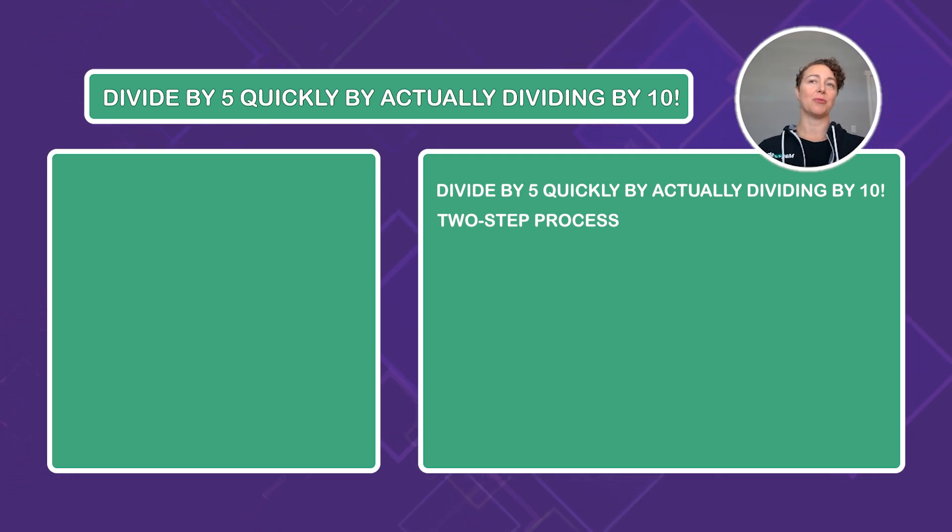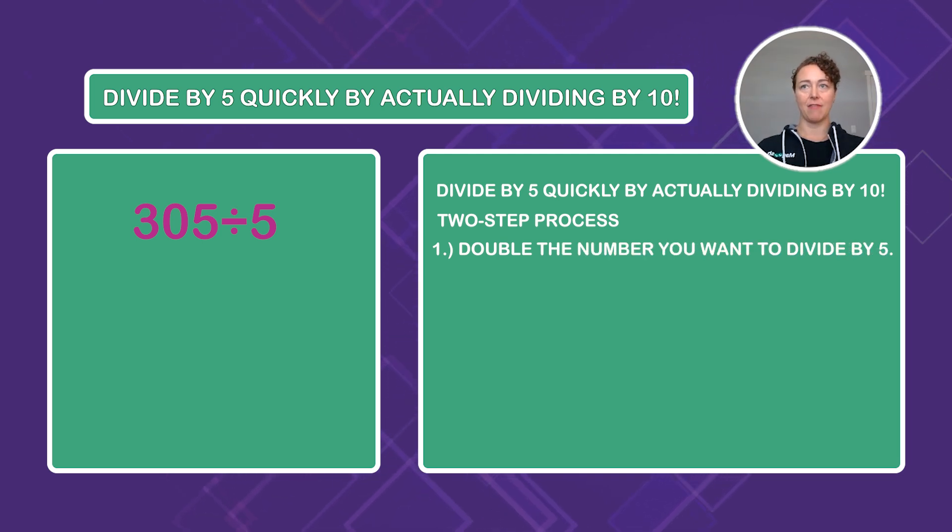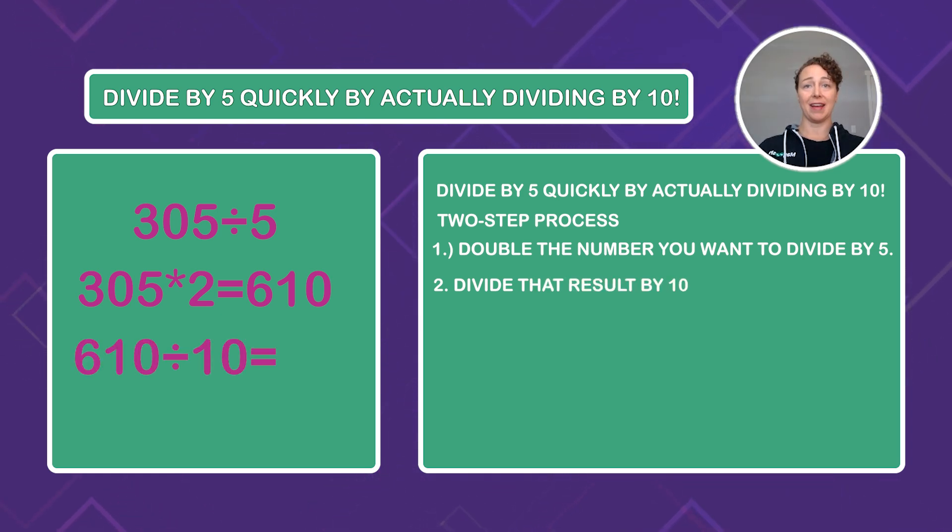To see how this works, we're going to use the example of 305 divided by 5. So the first thing we're going to do is double the number we want to divide by 5. So in this case, we're going to take 305, double it, and now we have 610. Now we have one step to go, and that is literally just to divide the result by 10. So divide 610 by 10 to land at 61, and that's it. You are done.